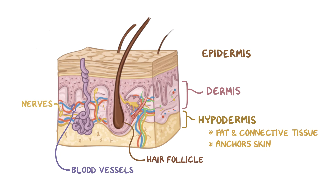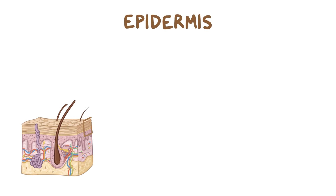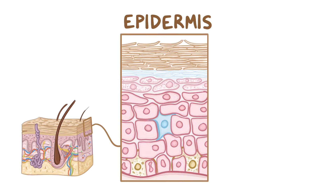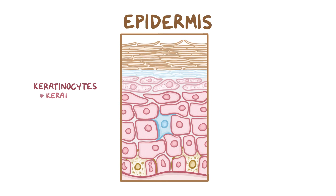And just above that, the outermost skin layer, is the epidermis. The epidermis itself has multiple skin layers that are mostly keratinocytes, which are named for the keratin protein that they're filled with. Keratin is a strong, fibrous protein that allows keratinocytes to protect themselves from getting destroyed, like when you rub your hands through the sand at the beach.